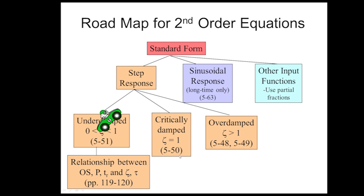Critically damped is equation 550, and underdamped is equation 551. With underdamped systems, one of the advantages is there are some nice equations that relate overshoot, period, and rise time to zeta and tau. We can observe those and calculate approximate values of zeta or tau. Of course, I'd prefer to use the sum of squared errors or optimization method to obtain those from data, but it is possible to do it graphically as well.